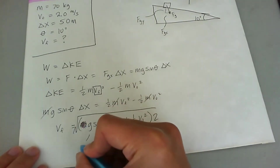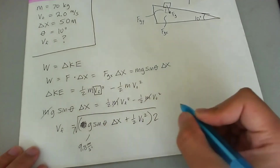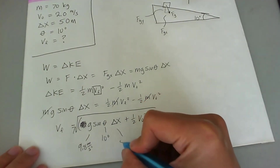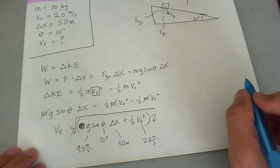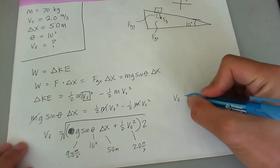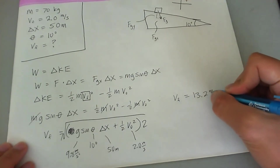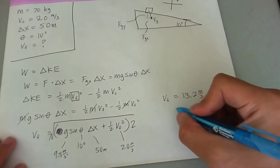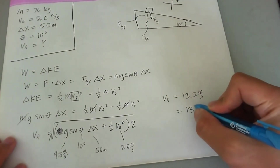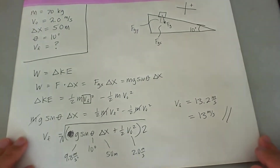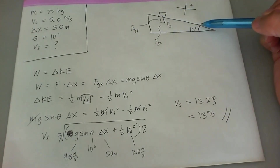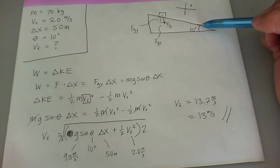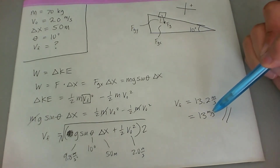G is 9.8 meters per second squared, theta is 10 degrees, delta x is 50 meters, and v-naught is 2.0 meters per second. Plugging all of this into the calculator gives vf equal to 13.2 meters per second, which in proper significant figure form is 13 meters per second. So a skier going initially at 2 meters per second slides down frictionlessly along 50 meters of a 10-degree slope, reaching a final speed of 13 meters per second.